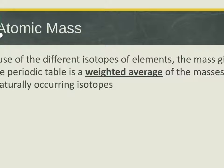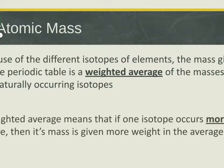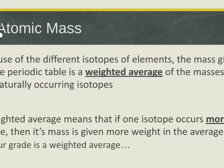There's more of certain isotopes — hydrogen-1 makes up the majority of all hydrogen in the universe, so we give it a weighting in the average. A weighted average means one isotope occurs more, so its mass carries more weight in the calculation.